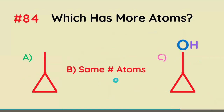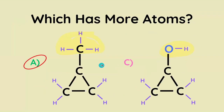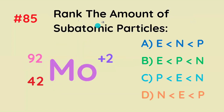Which of these has more atoms — this molecule or this molecule? It's actually the one on the left, because the ends and bends are carbons and they must have four bonds. This carbon only has one carbon bond, so it has to have three extra hydrogens.